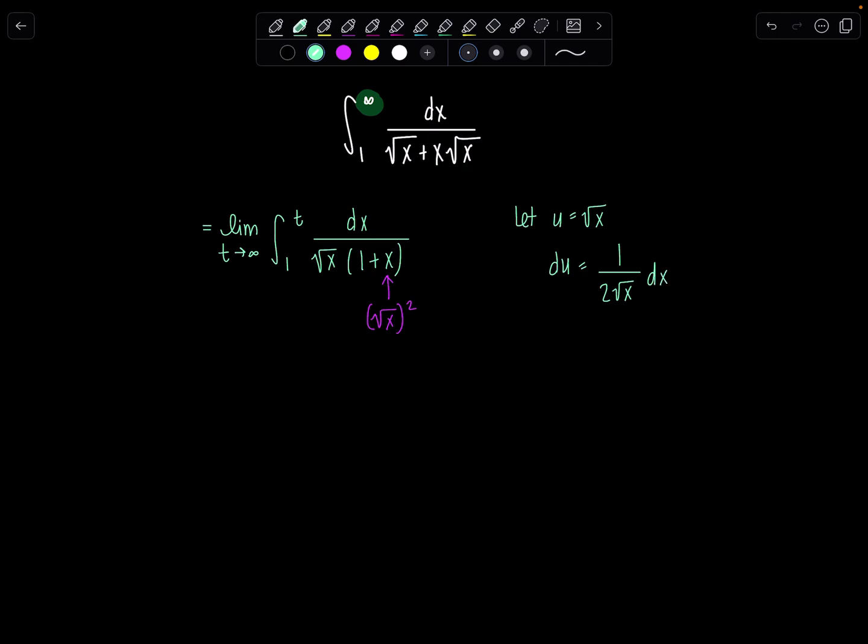Okay, do I have that? Almost, right? We have dx over rad x, but no 2 down there. So we'll move the 2 over to the other side. That means 2 du equals dx over rad x. Perfect.